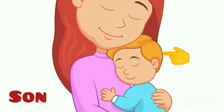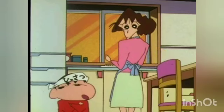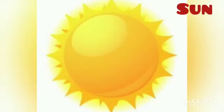Let's start with s-o-n (son). See the mother with her son. Now see one more example — a mother with her son. I hope you all got this meaning. Now here comes the turn of the second word, s-u-n (sun). See kids, this is the image of the sun.